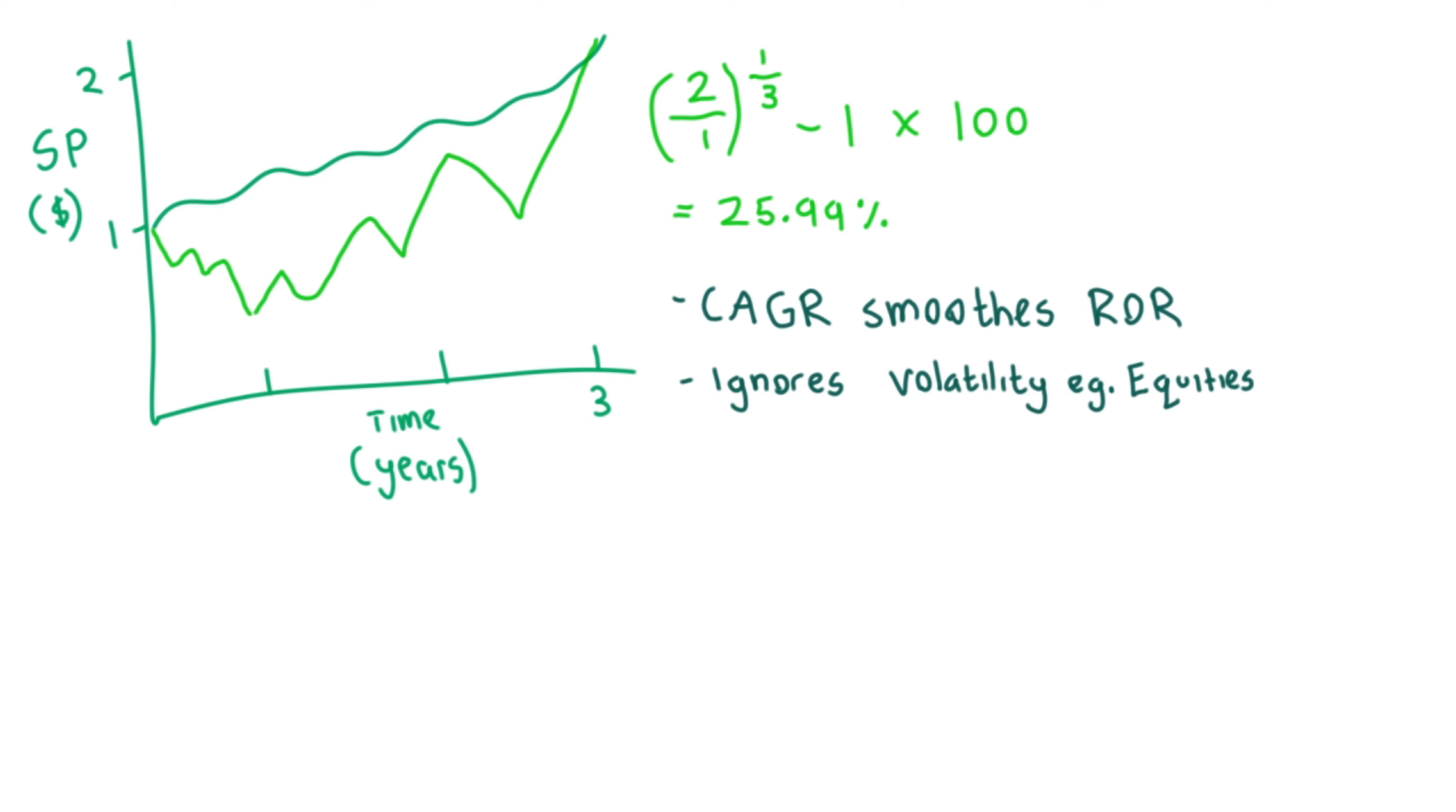Also, the CAGR does not account for when an investor adds funds to a portfolio or withdraws funds from the portfolio over the period being measured. It assumes someone buys and holds from the start of the period all the way through to the end. Besides the smooth rate of growth, the CAGR has other limitations.